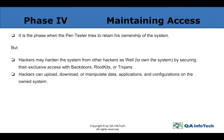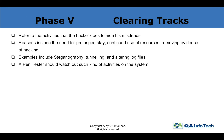The attacker must remain stealthy in the maintaining access phase so as to not get caught while using the host environment. The final phase of covering tracks simply means that the attacker must take the steps necessary to remove all semblance of detection. Any changes that were made, authorizations that were escalated, etc., must all return to a state of non-recognition by the host network's administrators. Examples include steganography, tunneling, and altering log files. A pen tester must watch out for such activities, and the reasons include the need for prolonged stay, continued use of resources, and removing evidence of hacking.